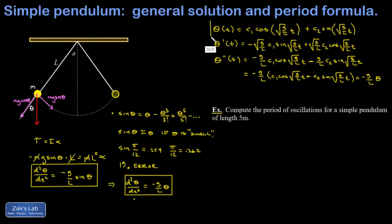So there's our general solution for theta as a function of time for a simple pendulum. And you can do problems where you're given initial conditions for the pendulum, like an initial angular position and angular velocity. And then you could find the angle as a function of time for any moment in time.